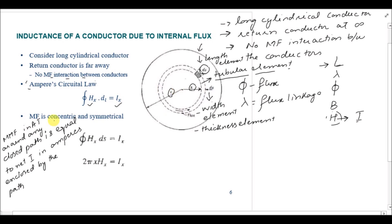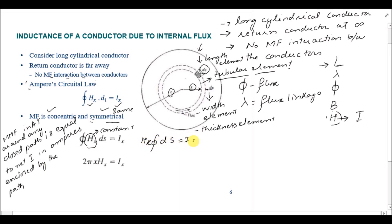There are two assumptions we are making. The first is that the magnetic field is concentric — all around the conductor in the form of circles — and it is symmetrical, meaning the same in all directions. If the magnetic field is the same, then H_x is constant and can be taken outside the integral. So the equation becomes H_x times 2πx equals i_x.